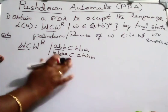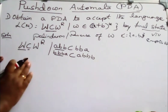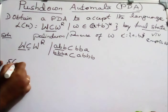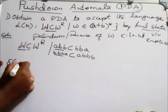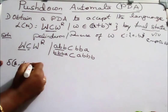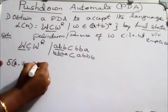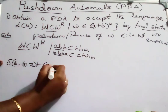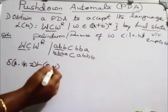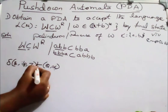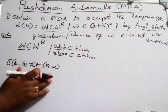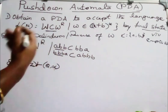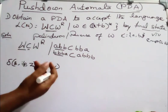How do we design the PDA to accept this language? We write the transitions as: the current state, the input symbol to be scanned, and the top of the stack. Based on that, we try to change the state to some new state followed by alpha — that is, we may push or pop the contents of the stack. We need to decide how many states the PDA will have, what the stack contents will be, and how it changes state.